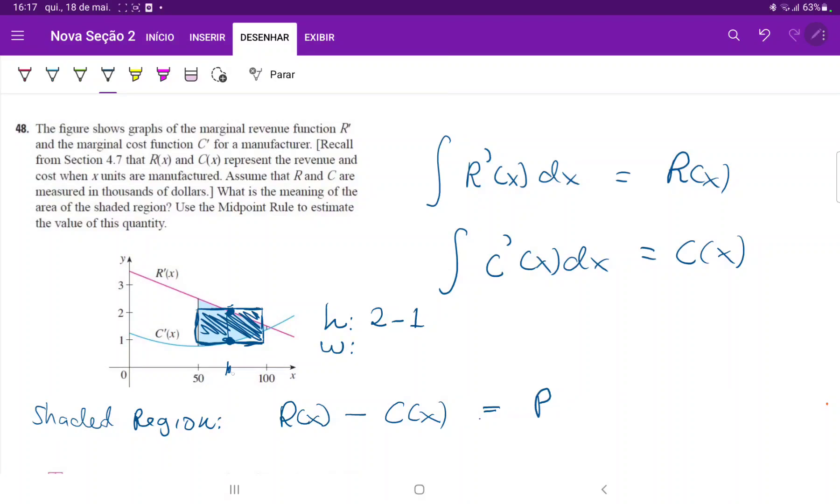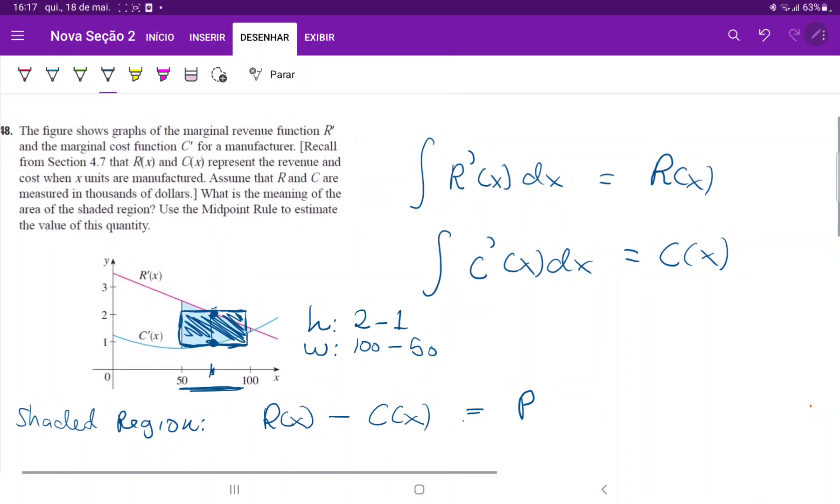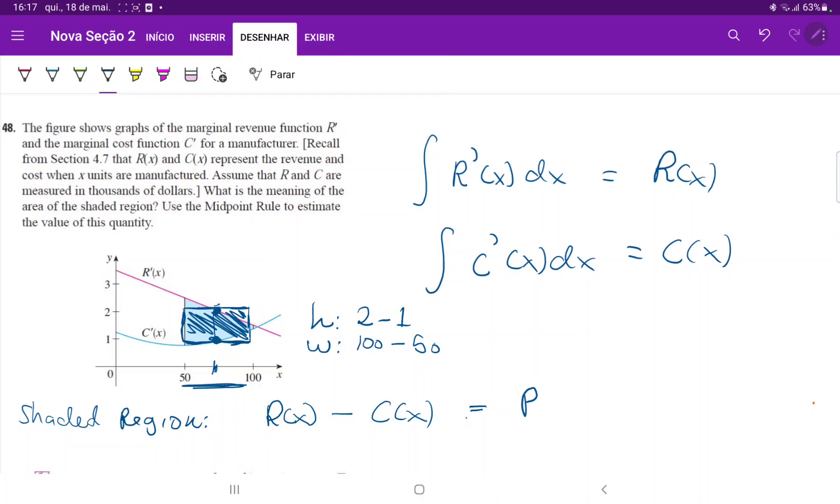The width, we did take the midpoint at 75. So the width is this whole part. So the width is 100 minus 50. So all we have to do now is just calculate the area of this rectangle that we created.